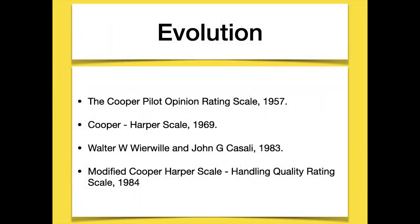Initially in 1957, a rating scale was introduced along with a discussion of understanding and interpreting pilot opinion. The scale was referred to as the Cooper Scale, also called the Cooper Pilot Opinion Rating Scale, designed by George Cooper. It piqued the interest of the international aviation sector but had some deficiencies, and an interim revised scale was introduced in 1966. A final version of the Cooper-Harper Scale was published in 1969 as NASA TN D-5153 in April 1969.